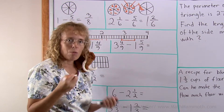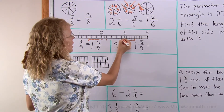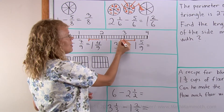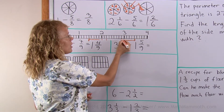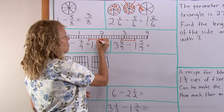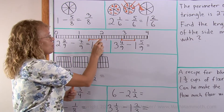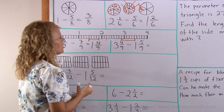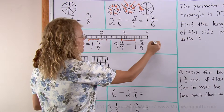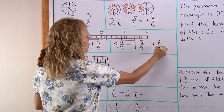And then take away 1. This line is just 1 ninth before the 3. So I take away 1 whole unit and I would land here — 1 line before 2. So that is 1 and 8 ninths.